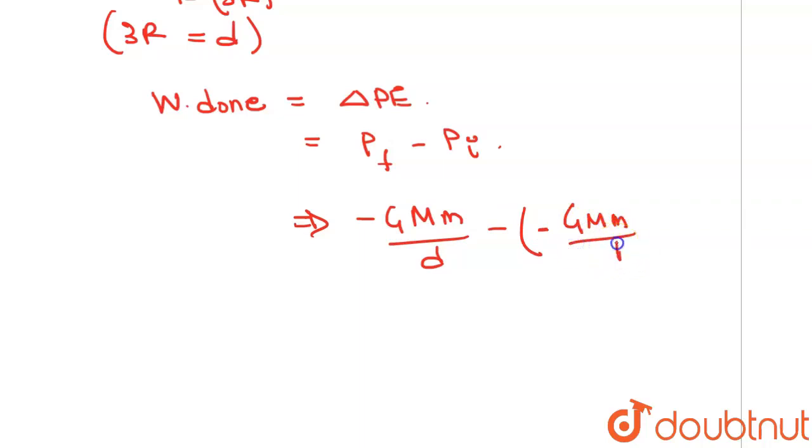3R plus G capital M small m over R. So this will be our final answer, that is the work done.